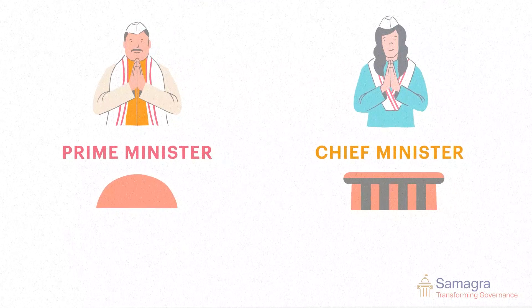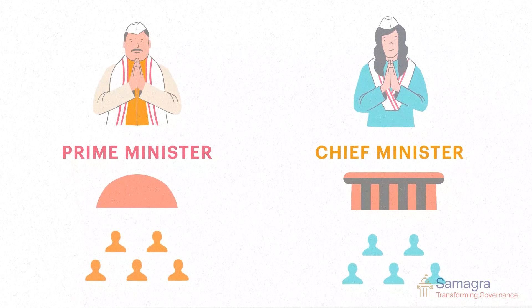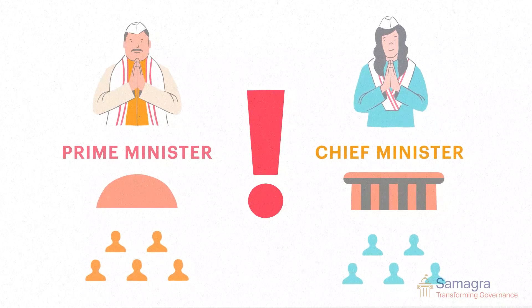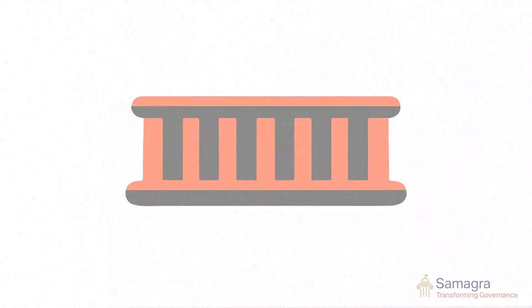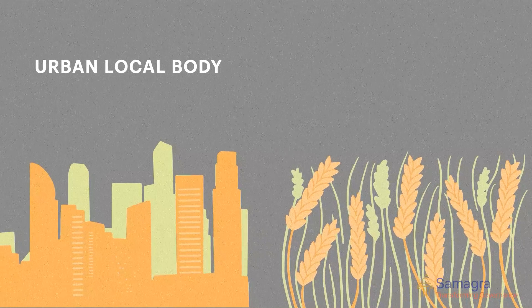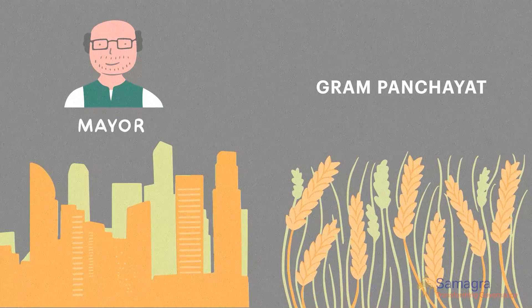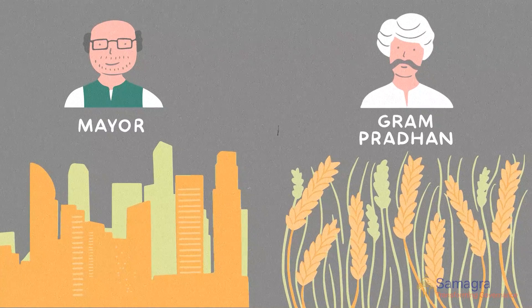The central and state government have the prime minister and the chief minister as their respective heads, supported by a council of ministers, who in turn lead their own ministries or departments. At the local level, the executive has two parts — urban and rural. Urban areas are governed by an urban local body headed by a mayor, while rural areas consist of gram panchayats headed by a sarpanch or gram padhan.